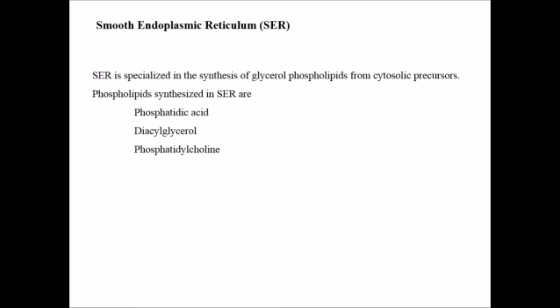All this was about rough endoplasmic reticulum. Now what about smooth endoplasmic reticulum? The smooth ER is specialized in the synthesis of glycerol phospholipids from cytosolic precursors. Phospholipids synthesized in SER are phosphatidic acid, diacylglycerol, phosphatidylcholine, phosphatidylinositol, phosphatidylethanolamine, and phosphatidylserine. Apart from this, it is also abundant in liver and is involved in metabolization of lipid-soluble compounds.